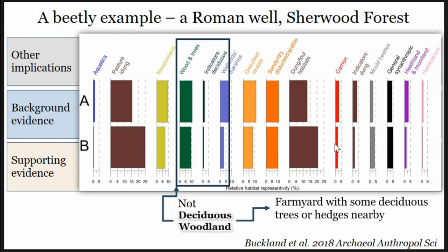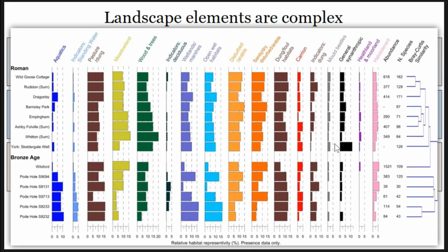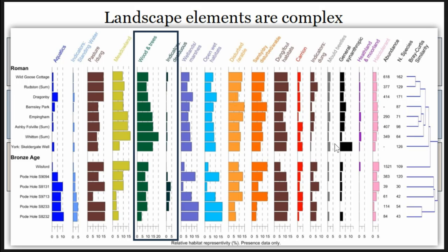Our conclusion in this context is that this is not a deciduous woodland — this is Sherwood Forest with its fields and some hedges. We can compare that to many other things because we have these databases, allowing very simple queries that produce massive amounts of data. Luckily this case was really nice: the Roman wells clustered together in terms of biodiversity and also gave reasonably similar environmental reconstructions. The Bronze Age waterholes — we're not calling them wells — also clustered together. But you can see 20% woodland for a Roman site in Wales versus 9% here, with more indications of deciduous woodland in the Welsh case — a lot of nuances.